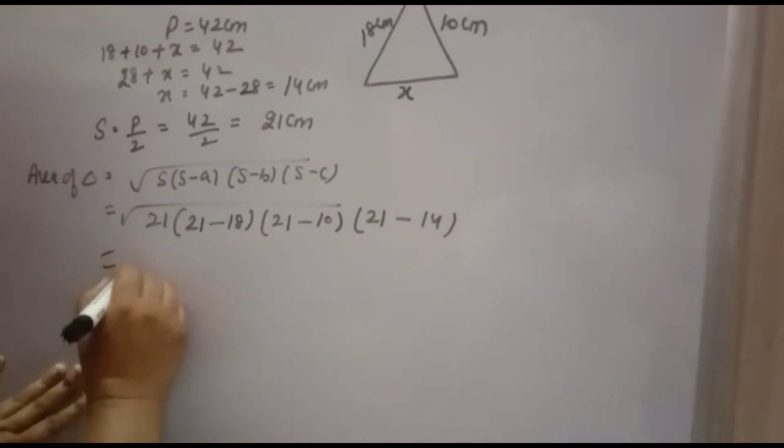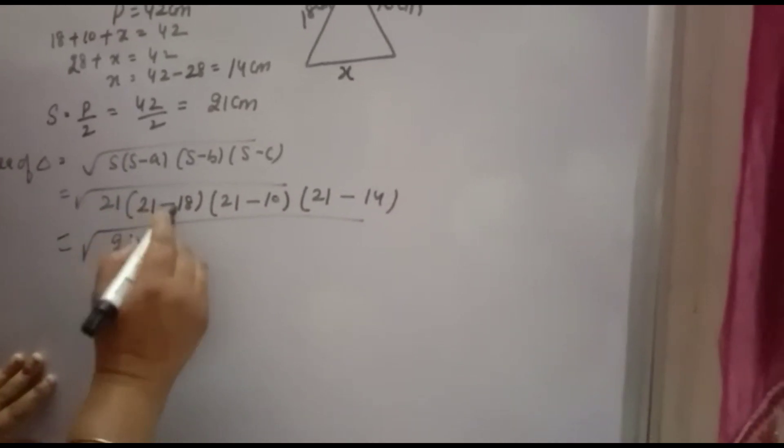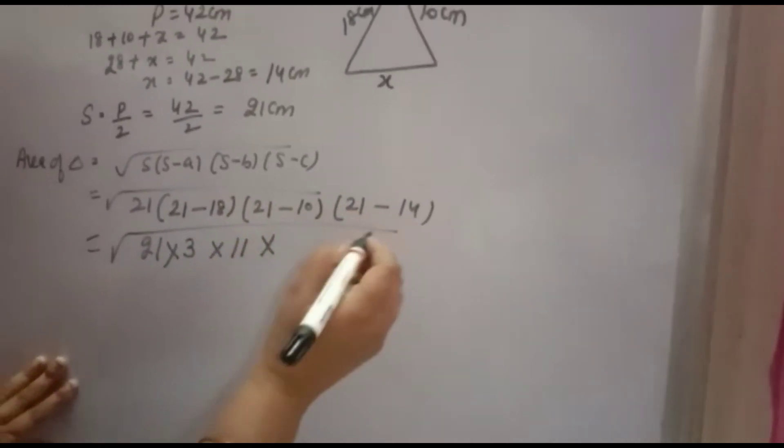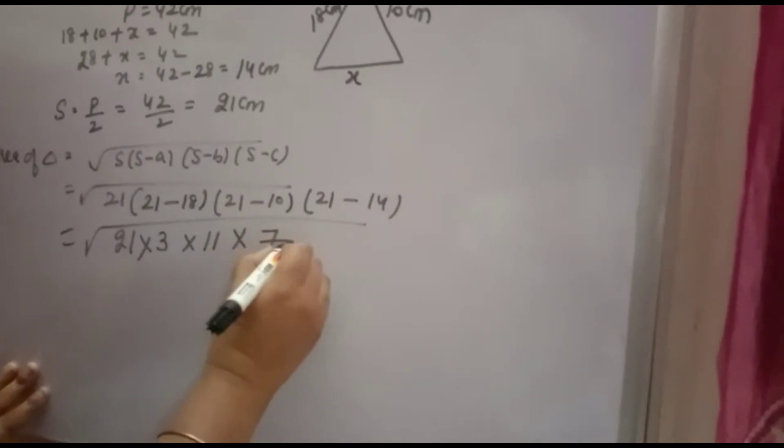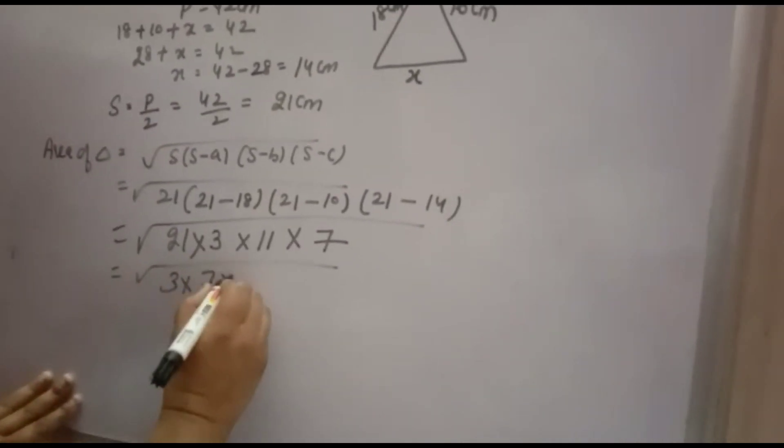Now we solve further: 21 - 18 = 3, 21 - 10 = 11, and 21 - 14 = 7. We can write 21 as 3 × 7. Since we have a square root, we need to do pairings.